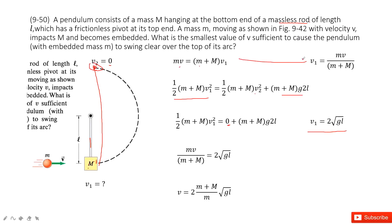And from this equation, we can get v1 is mv divided by m plus M. Now we can see these two v1 equations are equal. So we get this equation.